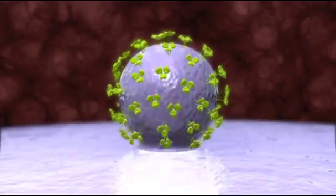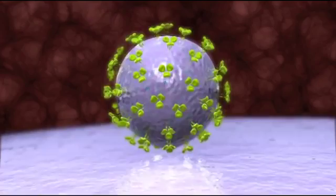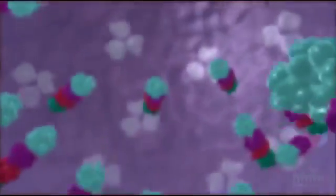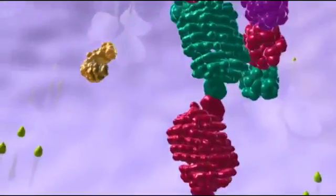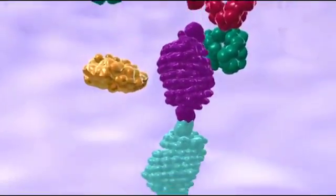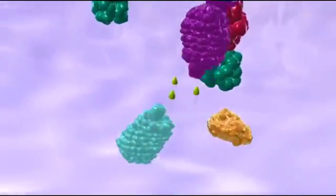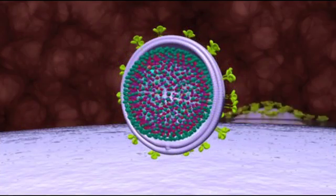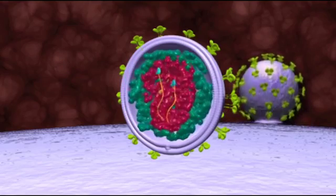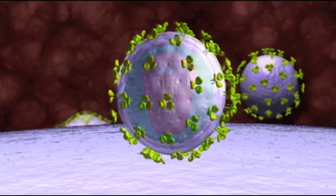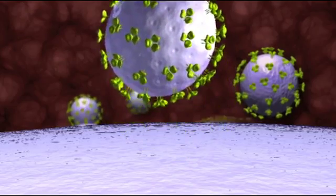This then buds off at the cell surface, but it's still not a mature virion because the polyprotein chain needs to be digested into its component parts. That's done by an enzyme called protease. Protease breaks up those polyprotein chains and allows them to coalesce and form the mature structures that make up the final virion. Now you have a mature infectious virion that can go on to infect other cells.